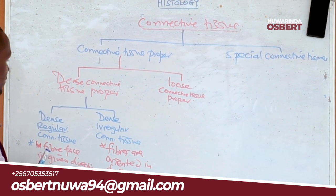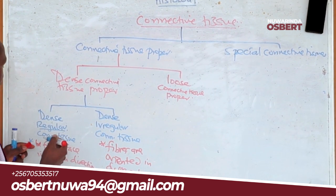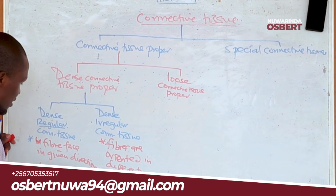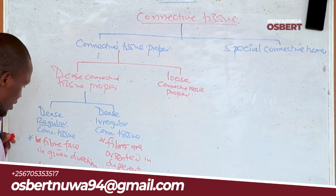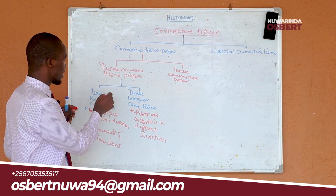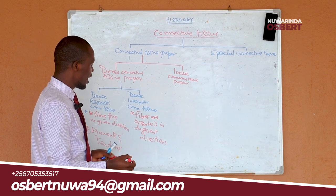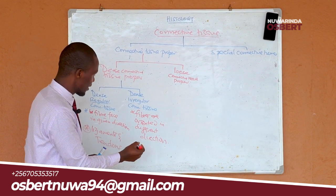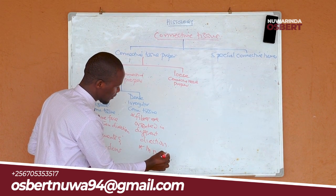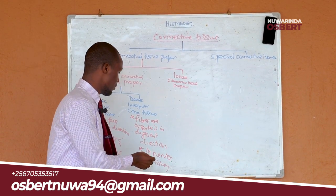For dense irregular connective tissue, where fibers are oriented in different directions, examples include nerves and kidneys, and many other areas.